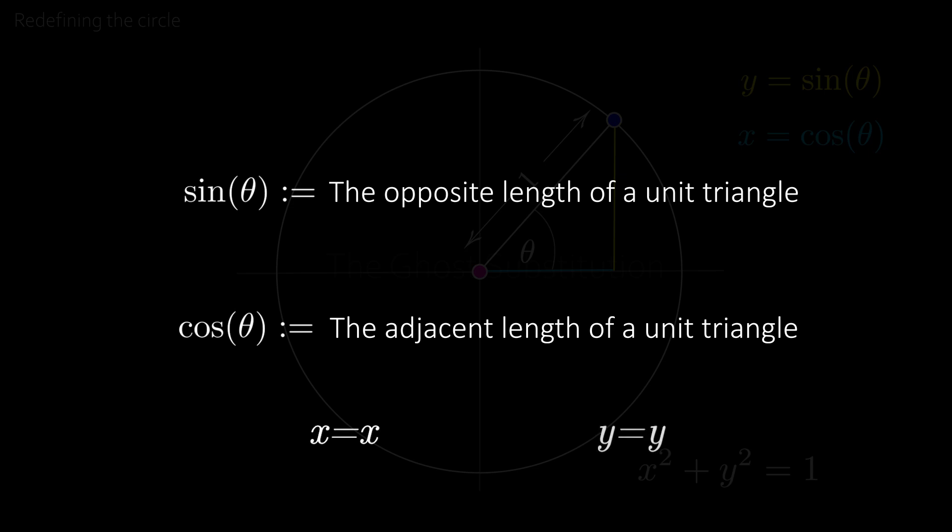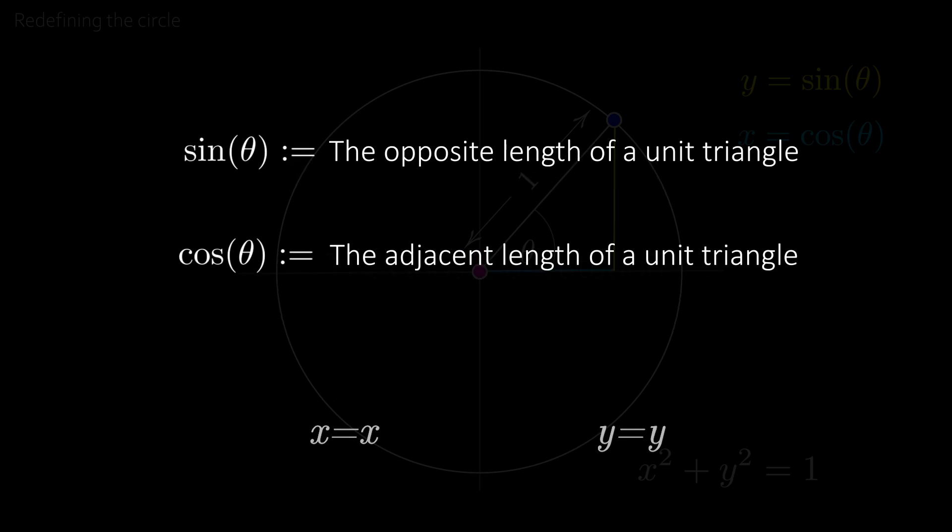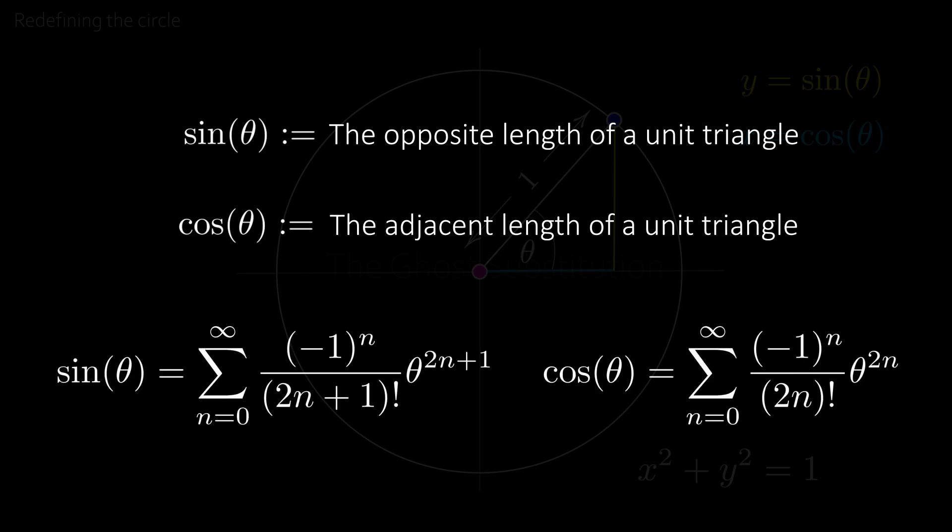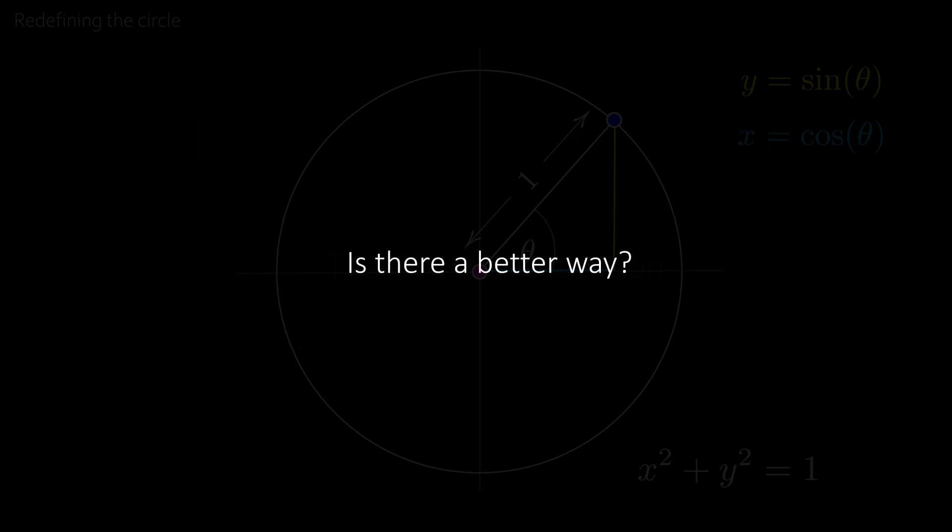which is what the x and y coordinates actually are. So it's almost like saying the x coordinate is the x coordinate, and the y coordinate is the y coordinate, and calculating the actual values of sine theta and cosine theta is significantly more complicated. So is there a better way?